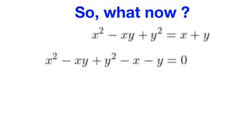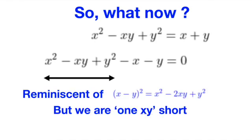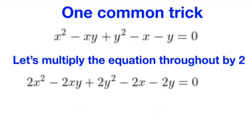So what do we do now? Remember that we need to find integers x and y which satisfy the equation. If we take a closer look, the first few terms seem to be closely resembling the expansion of x minus y squared, where we are just one xy short. Is there a way to somehow create this extra copy of xy to allow for our factorization?